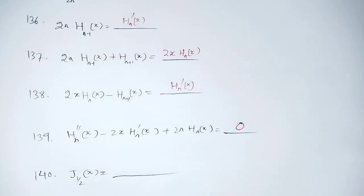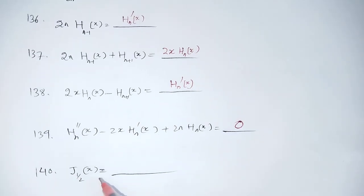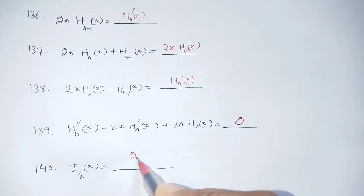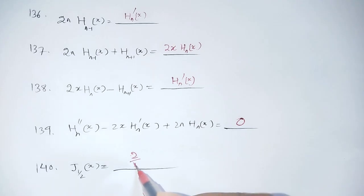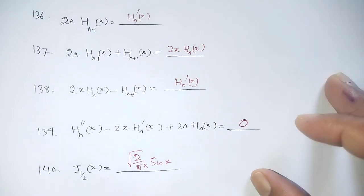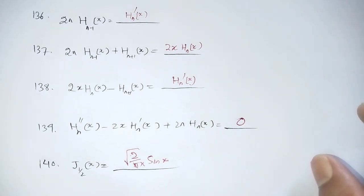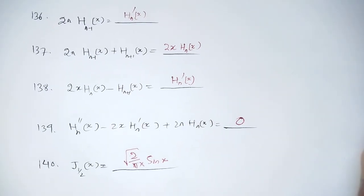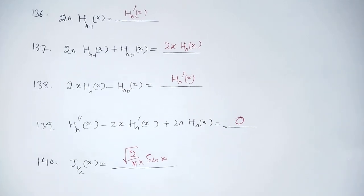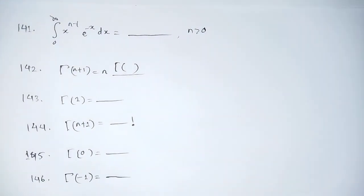Pointing out a simple result: J_(1/2)(x) = √(2/πx) · sin(x). Next, we will discuss the special functions — beta function and gamma function.